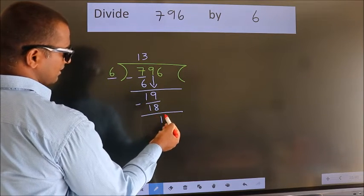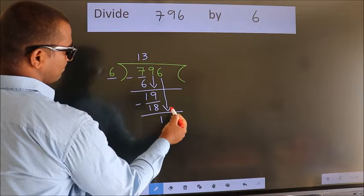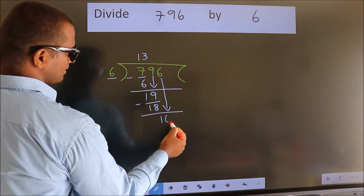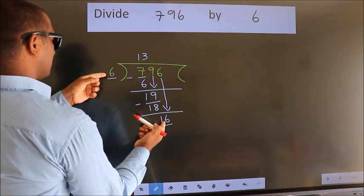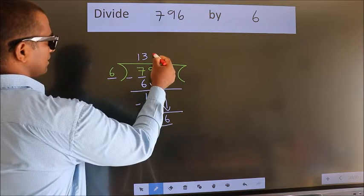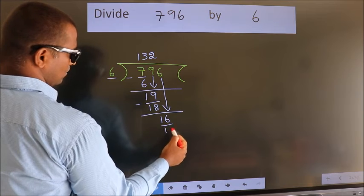After this, bring down the beside number. So, 6 down. 16. A number close to 16 in 6 table is 6 twos, 12.